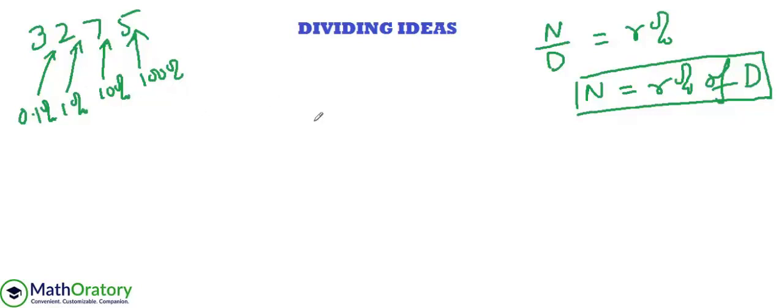Now using these two ideas, let's say I need to divide. Let me take a random number as random as possible. Let's say 2793 divided by 32587. So let's say I need to divide this number by this number.